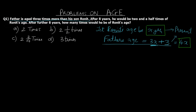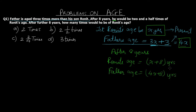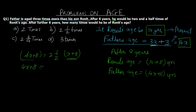Now the second statement: after eight years he would be two and a half times of Ronit's age. After eight years Ronit's new age will be x plus 8, and father's new age will be 4x plus 8. Mathematically: 4x plus 8 equals 2 and a half times of (x plus 8). Two and a half can be written as 5 by 2. So 4x plus 8 equals (5/2)(x plus 8). We now have one equation with one variable to solve.